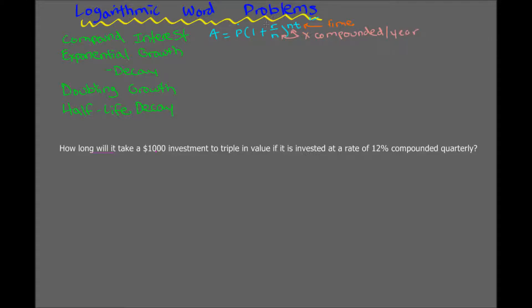And R is rate. P is principal or starting amount, and A is the final amount. That's compound interest.